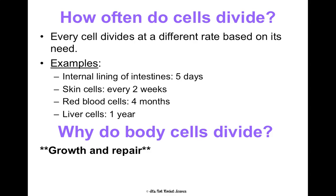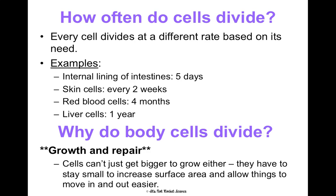Why do body cells divide? They're dividing because of growth and repair. And they can't just get bigger — we need the cell to stay small so that there's more surface area, because that's what allows things to move in and out of them really easily. We talked about how important cell transport is for maintaining homeostasis, which is why we really want to keep cells small. That's why we double them in order to grow, as opposed to just making the actual size bigger.